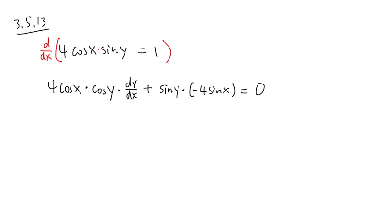And now, we are going to isolate the dy/dx. This is the part that we want to isolate. So I might want to just keep it on the left-hand side. And on the left-hand side, I just see that I have 4 cosine x, cosine y, dy/dx.